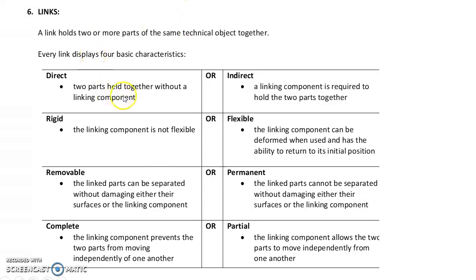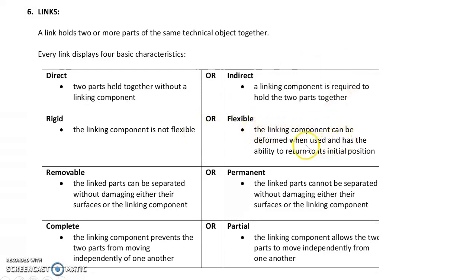Links bind two objects together, and every link displays four basic characteristics. First, direct vs. indirect: a direct link means two parts are held directly together without a third party; indirect means two parts are linked via a third party such as a screw, nail, glue, or velcro. Second, rigid vs. flexible: rigid means the object is not flexible — for example, the cap of a pen forms a rigid link.